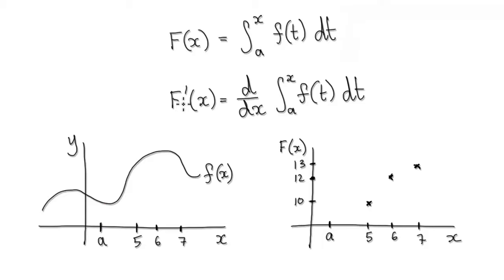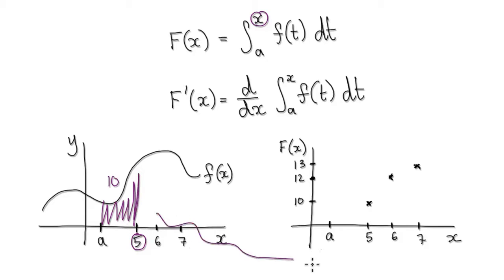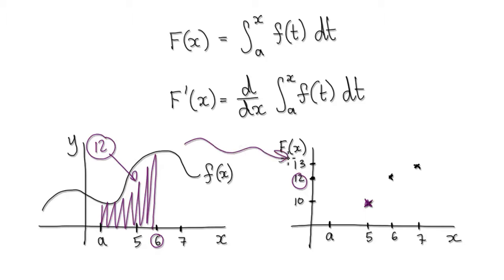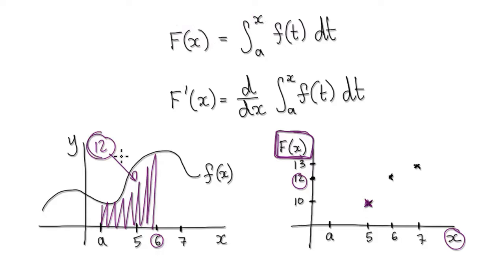Now suppose x is 5. From a to 5, it gives us an area — let's imagine this area is 10. So when we plot it, when x is located at 5, it gives us a value of 10, so we put a cross there. Now suppose x is 6. That gives us the area from a to 6 — let's imagine that area is 12. So on this graph, where the vertical axis is the area, capital F of x, we would plot it at 12.